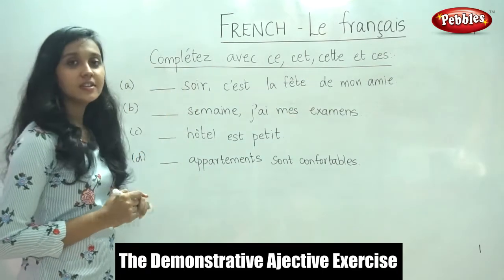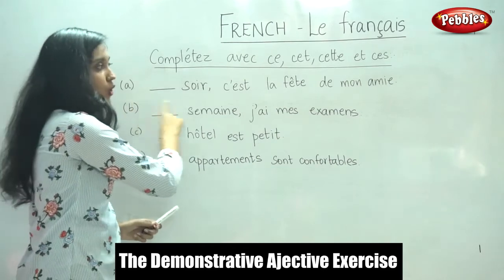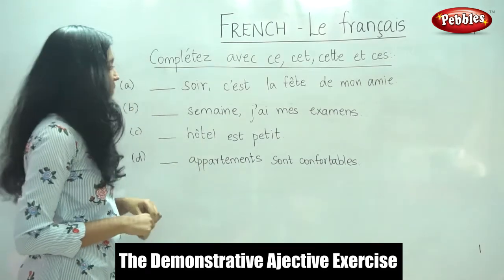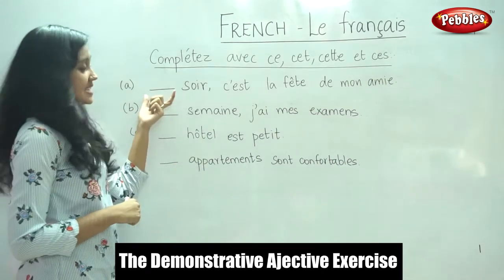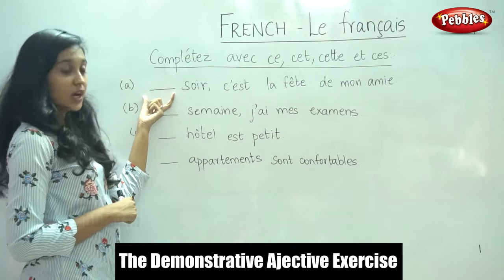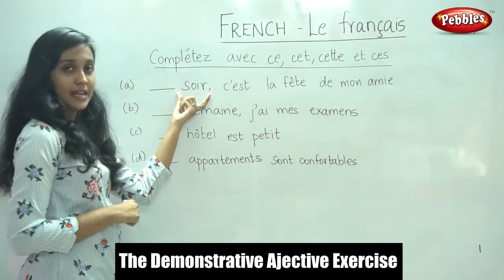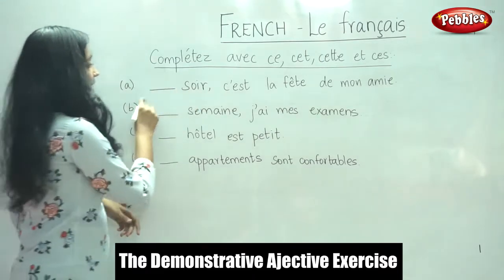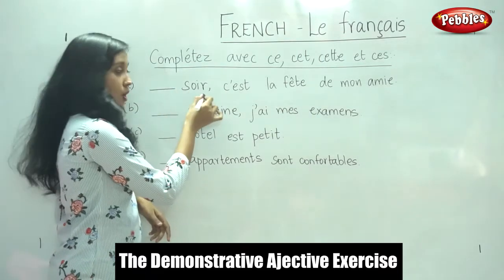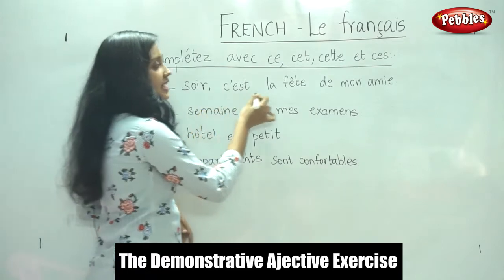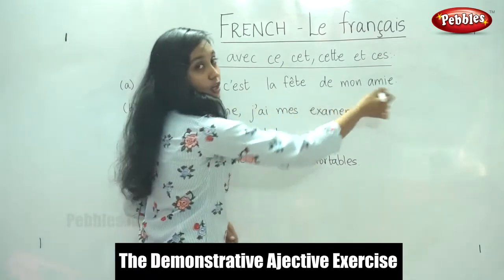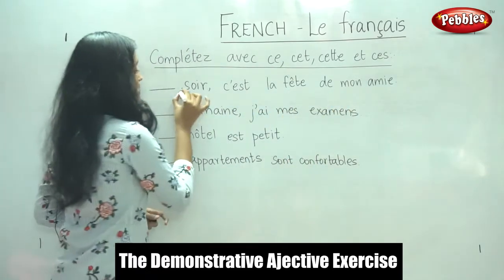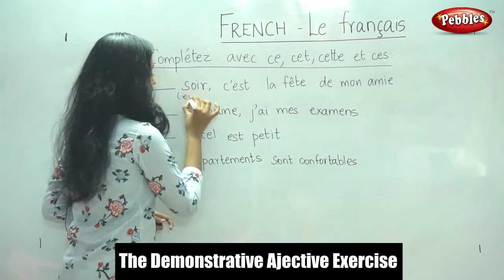We have a few steps here. First, you have to read the sentence and see what is the noun after the blank. So in the first sentence: dash soir, ce la fête de mon ami. What does 'soir' mean? It means evening.